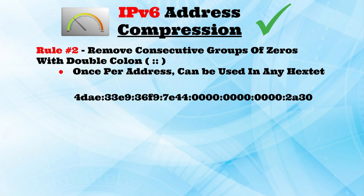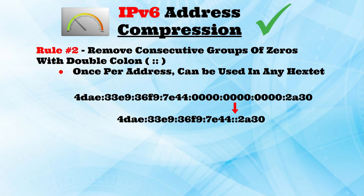Let's try another example. As you can see, there are three consecutive groups of zeros towards the middle of the address. Once again, we can replace all these zeros with a double colon.